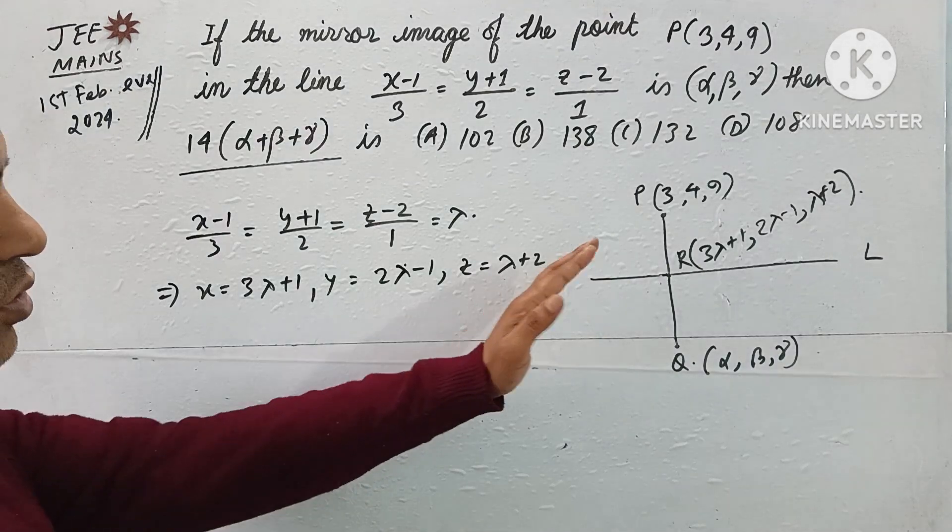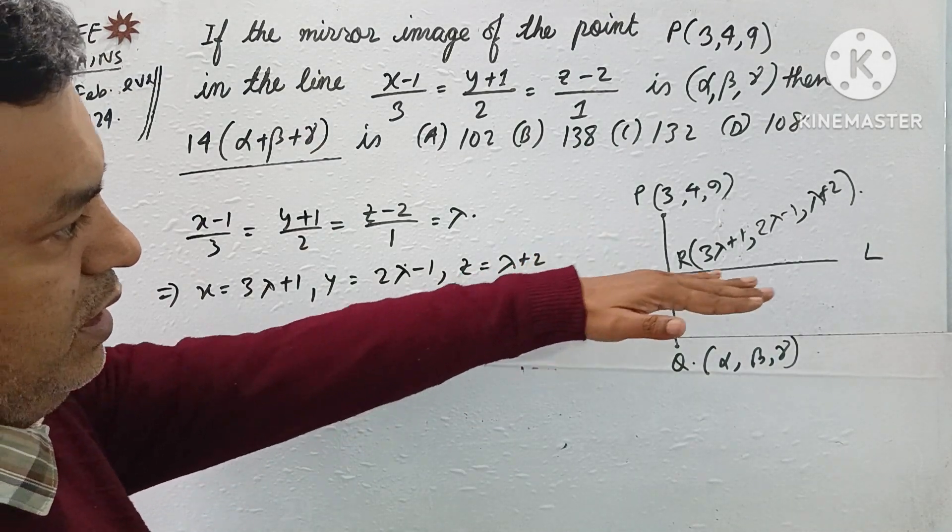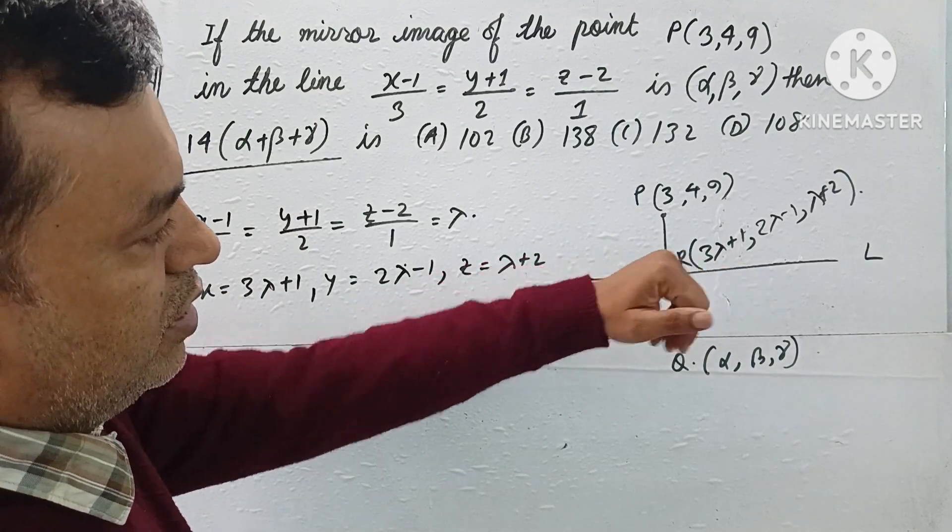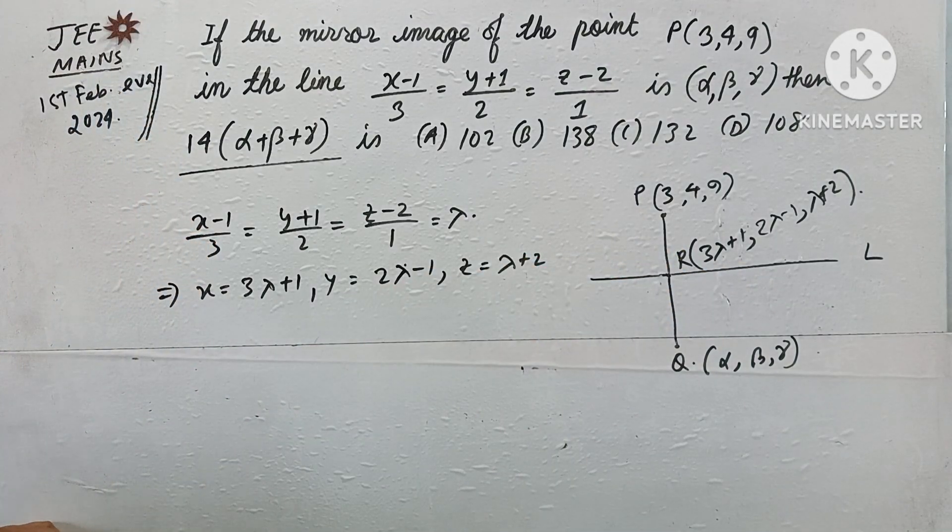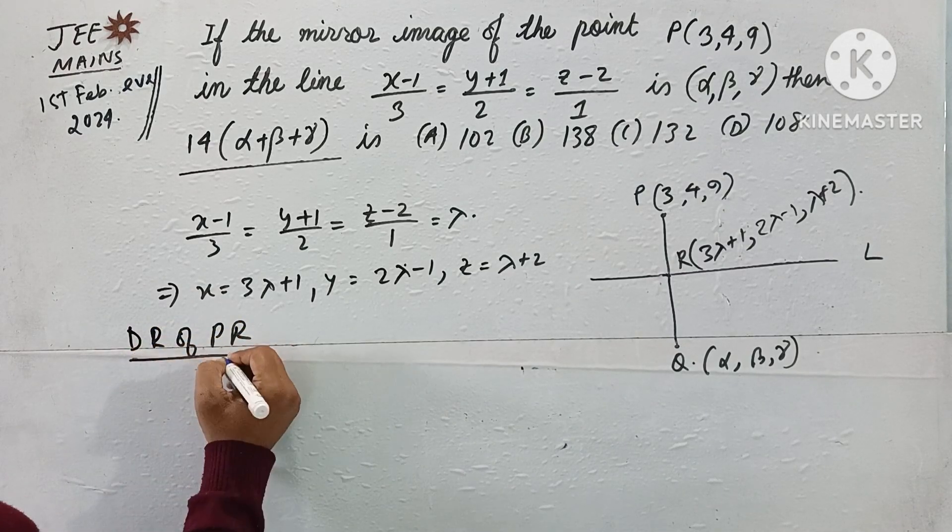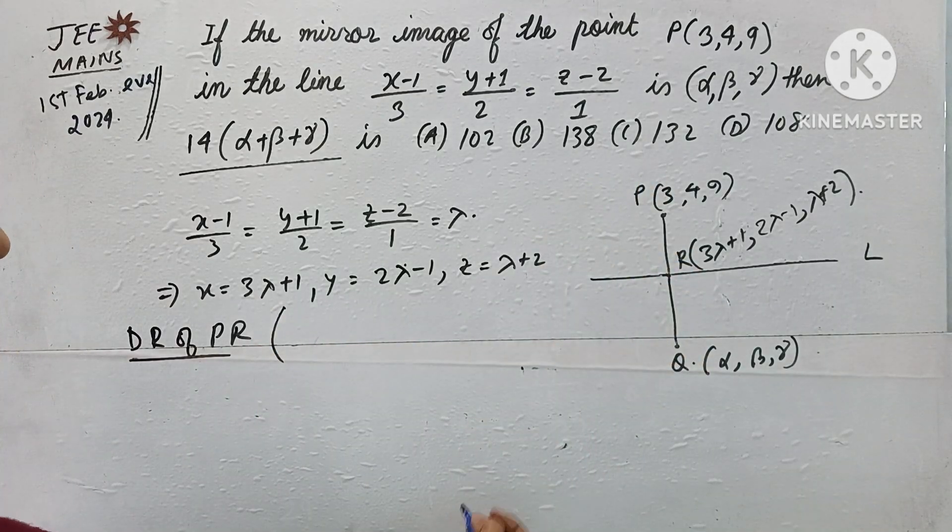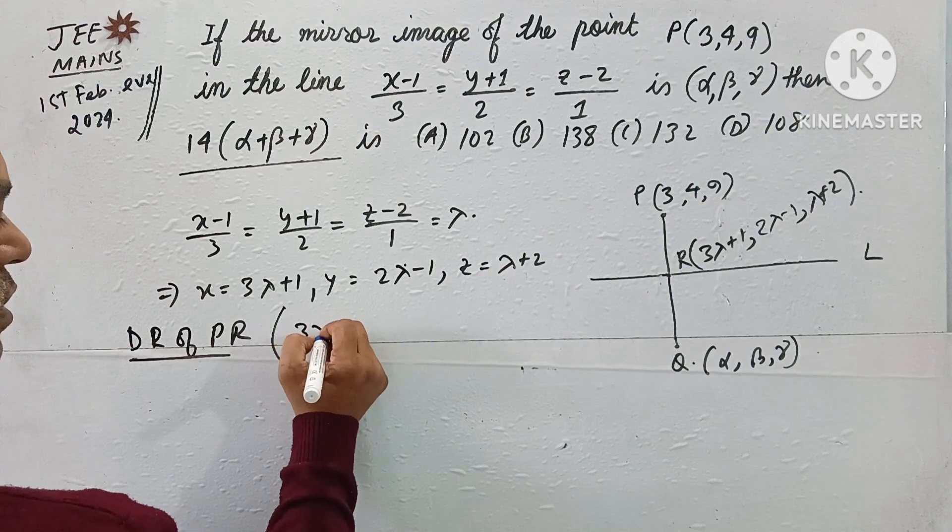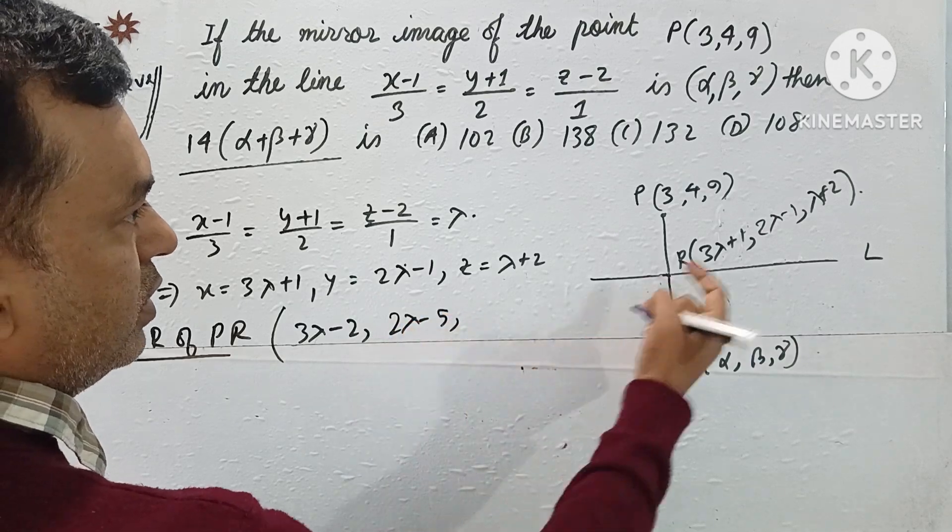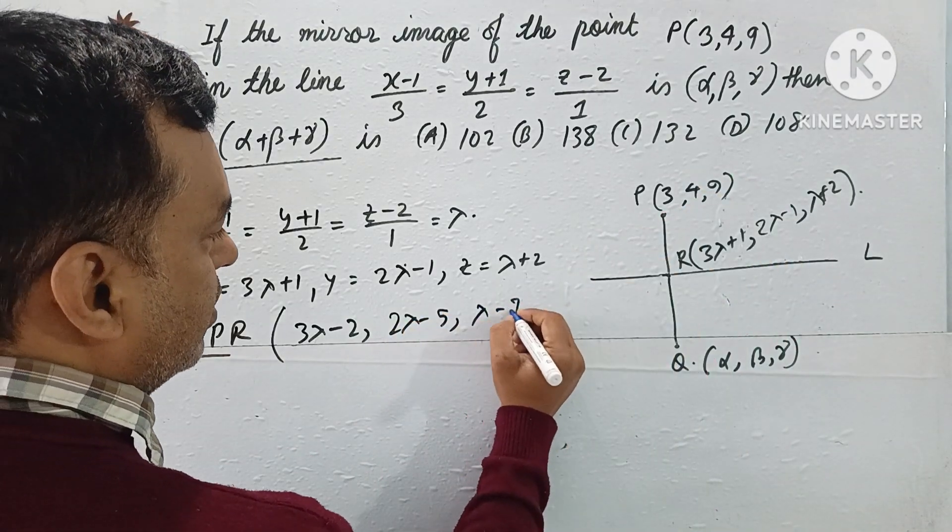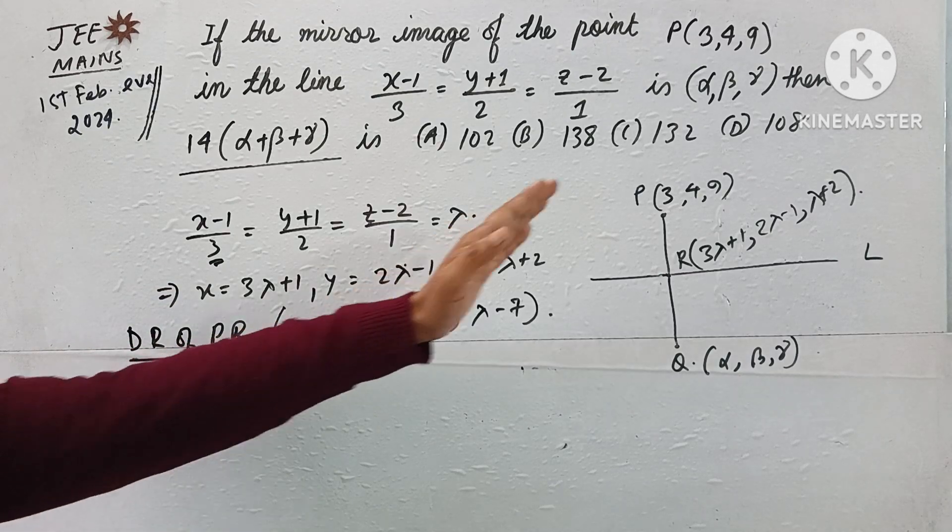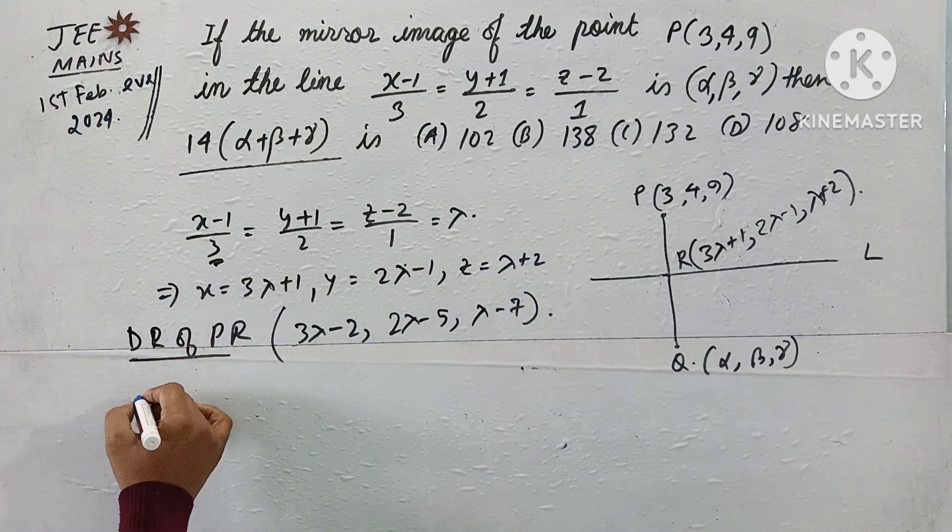If PR is perpendicular to L, then PR's direction ratio and line's direction ratio product will give us 0. Direction ratio of PR will be 3λ-2, 2λ-5, λ-7. The line's direction ratio is (3,2,1). Their product equals 0.